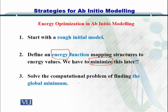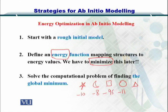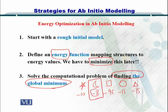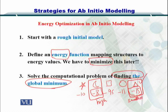Now you have multiple structures, and each one has an energy corresponding to the number of hydrogen bonds in that structure. You have to find the global minimum. As you can see here, one structure has minus 8, which is high, while another structure has minus 15, which is the smallest. So this is the structure with the lowest energy — you select this structure and then check for its biological plausibility.